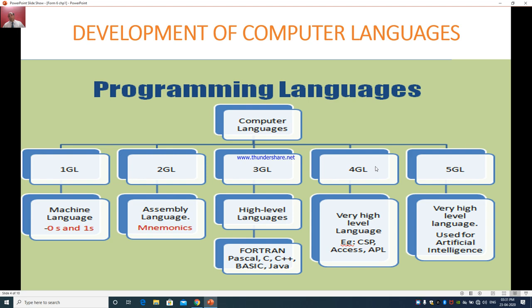Then came the fourth generation language which is called as very high level language. Example of such language is CSP, XS, APL. And then came the 5G, that is the fifth generation language which is very high language used for artificial intelligence.